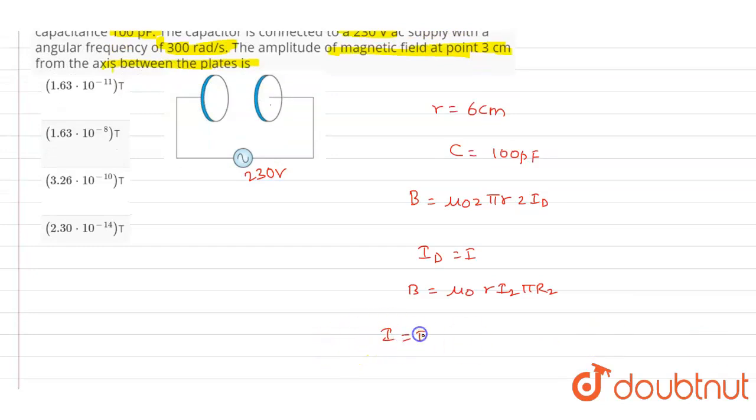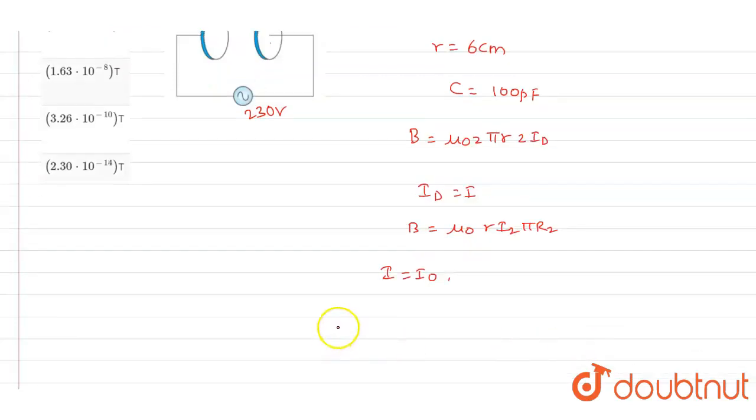If the value of I equals I naught, the maximum value of the current, then the amplitude of the magnetic field will be maximum. So we will write mu naught times r times I naught divided by 2 pi r squared.